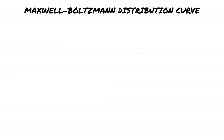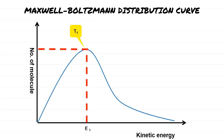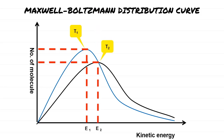We're going to use the Maxwell-Boltzmann distribution curve to explain the effect of temperature on reaction rate. This curve shows the kinetic energy distributions for a reaction mixture at two different temperatures. The y-axis represents the number of molecules and the x-axis represents kinetic energy. The first curve shows average kinetic energy at T1 as E1, and the second curve shows average kinetic energy at T2 as E2.